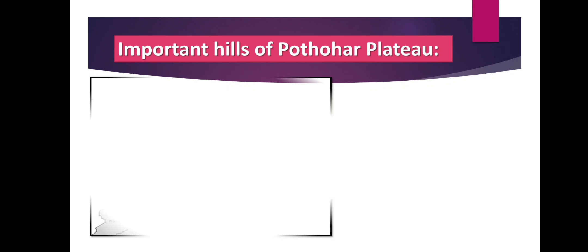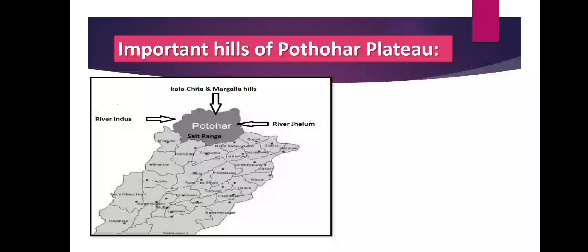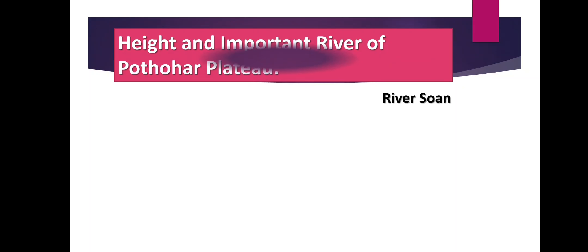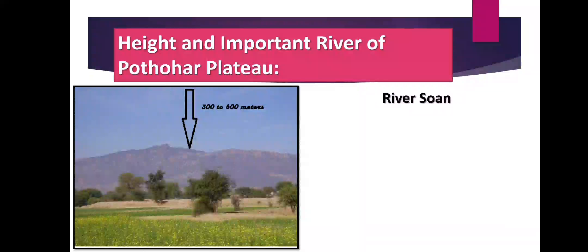The important hills of Potohar Plateau, located in the Punjab area: Potohar Plateau has Kala Chitta and Margala Hills in the north. The Salt Range lies to the south, River Jhelum to the east, and River Indus to the west. Coal and mineral oil are found in this region. The main areas of Potohar Plateau include Attock, Rawalpindi, Chakwal, Jhelum, and Islamabad.